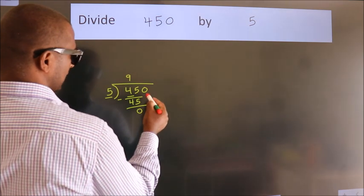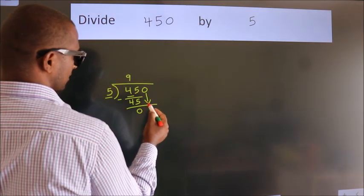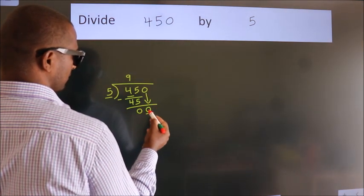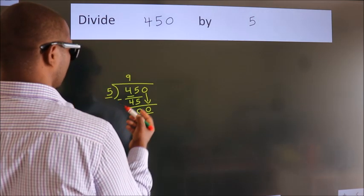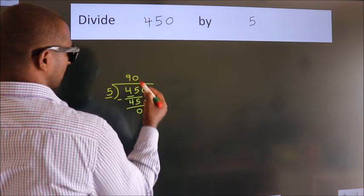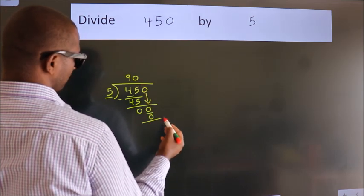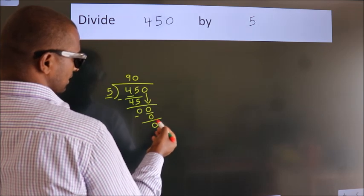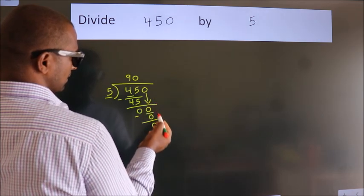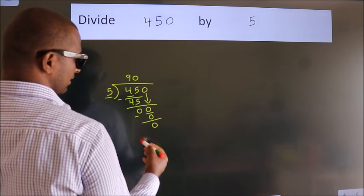After this, bring down the beside number, so zero down. When do we get zero in the 5 table? Five times zero is zero. Now we subtract. We get zero.